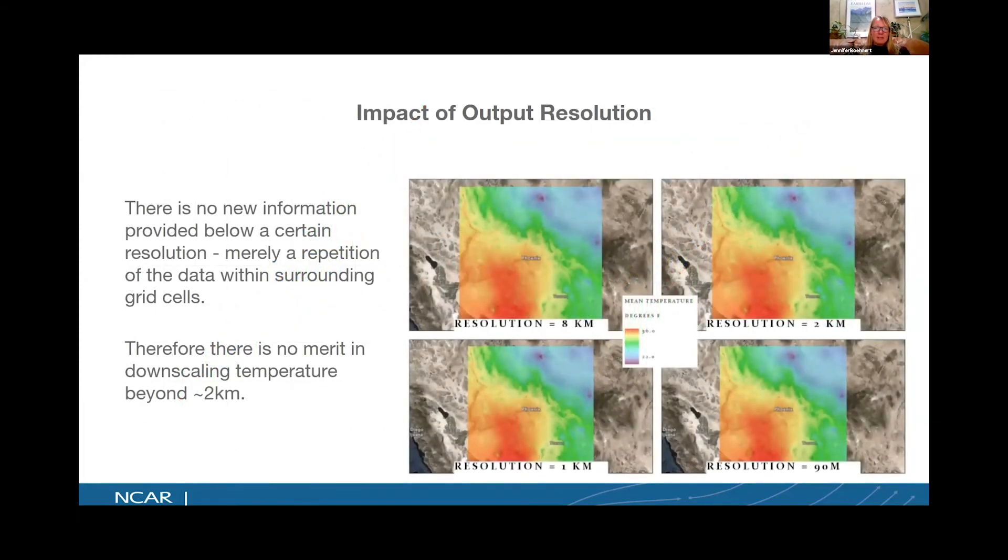We then also wanted to take a look at the impact of output resolution. Of course, everybody wants data at 30 meters. However, we wanted to take a look at when does that resolution really stop creating new information? So we did some analysis and we took again that 100 kilometer output data and we ran it to go as low as about 90 meters. And we found in this analysis that at about two kilometers, we were not generating any new information. We were simply re-gridding the existing information. So keeping that in mind, yes, you can generate data at a very fine resolution. However, there is going to be a point when you're not adding any new information, you're simply re-gridding your existing information.